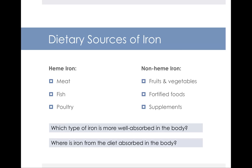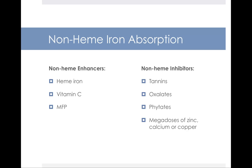Where do we find iron in the diet? There are two types of iron: heme iron and non-heme iron. Heme iron is more well absorbed by the body than is non-heme iron. Heme iron comes from meat, fish, and poultry. Non-heme iron comes from fruits and vegetables, fortified foods, and supplements. Iron from the diet is absorbed into your body in your intestinal mucosal cells. Things in your diet that increase your body's ability to absorb non-heme iron include having some heme iron in your diet from meat, fish, and poultry — sometimes abbreviated MFP — and vitamin C also enhances non-heme iron absorption.